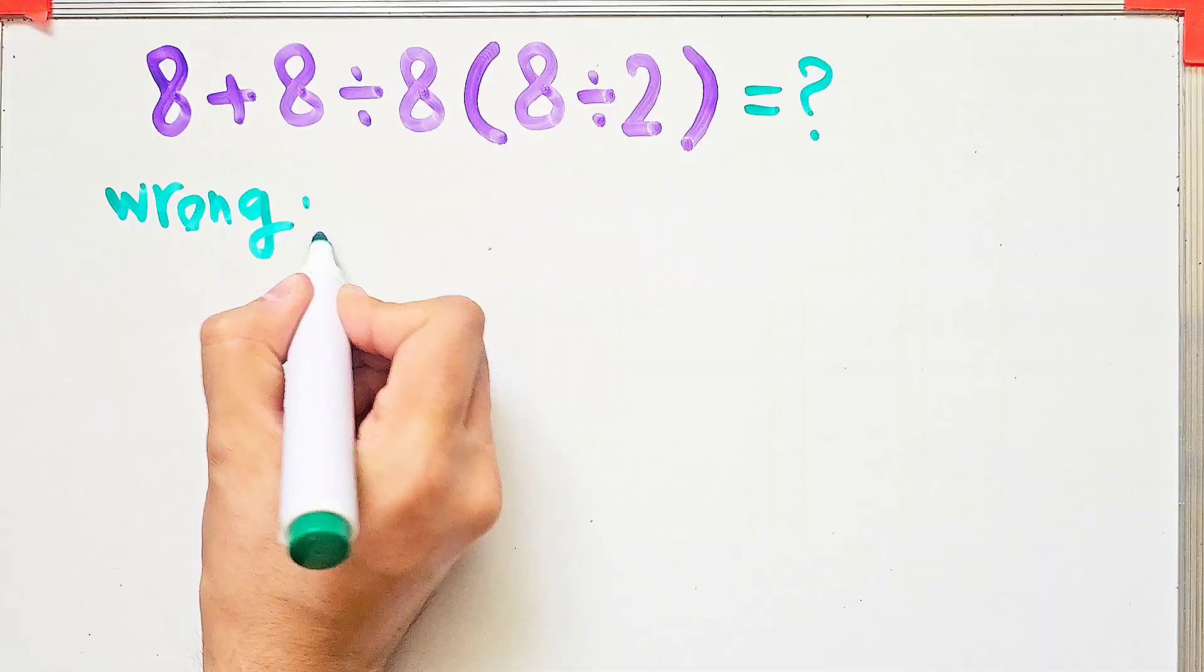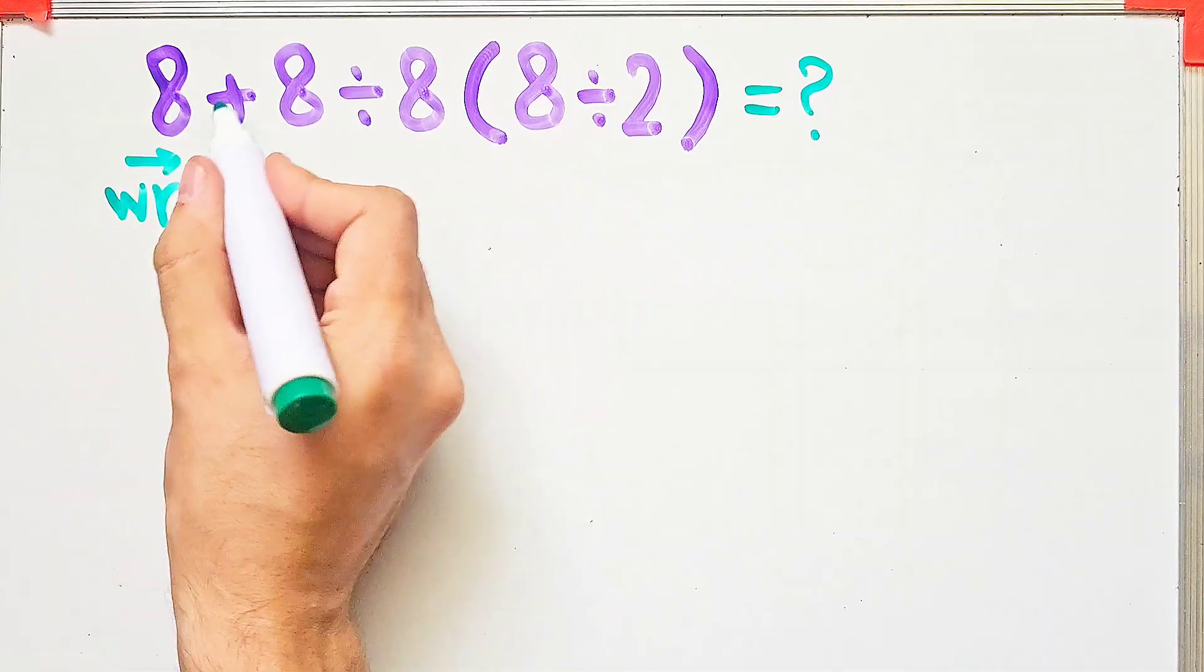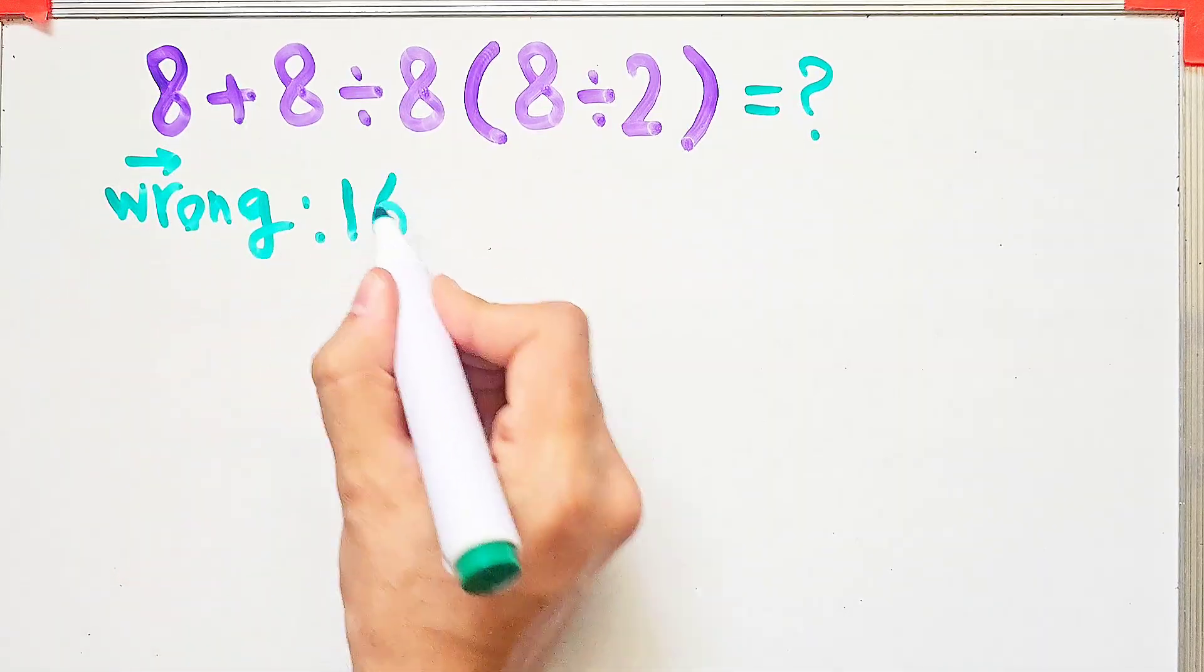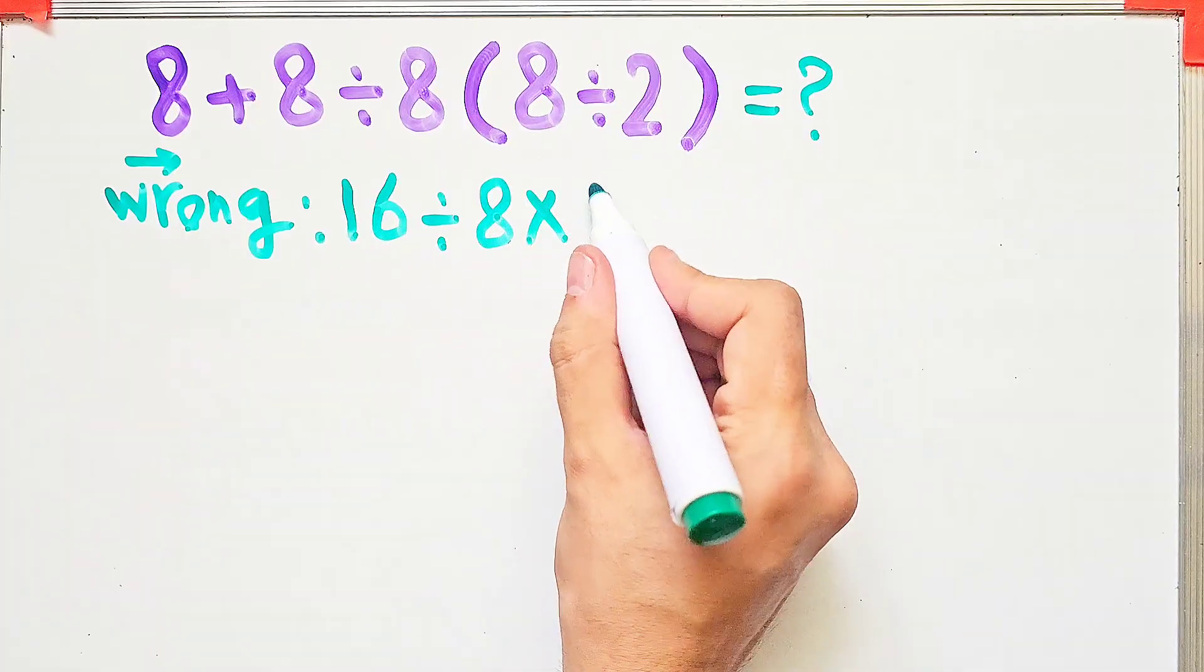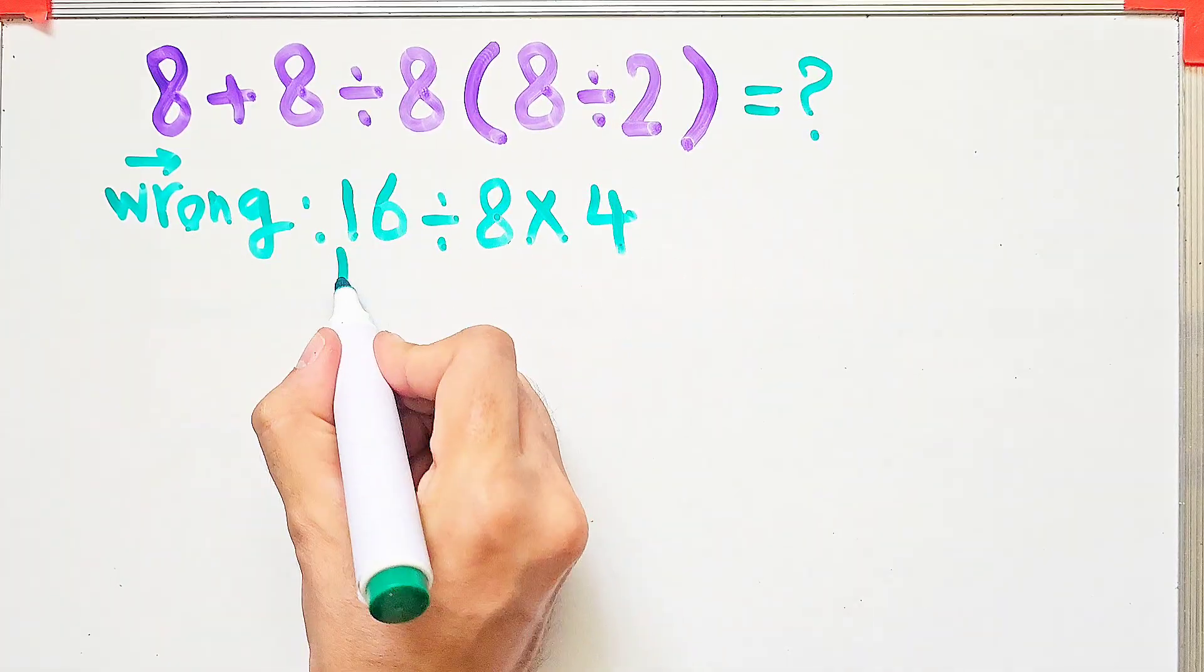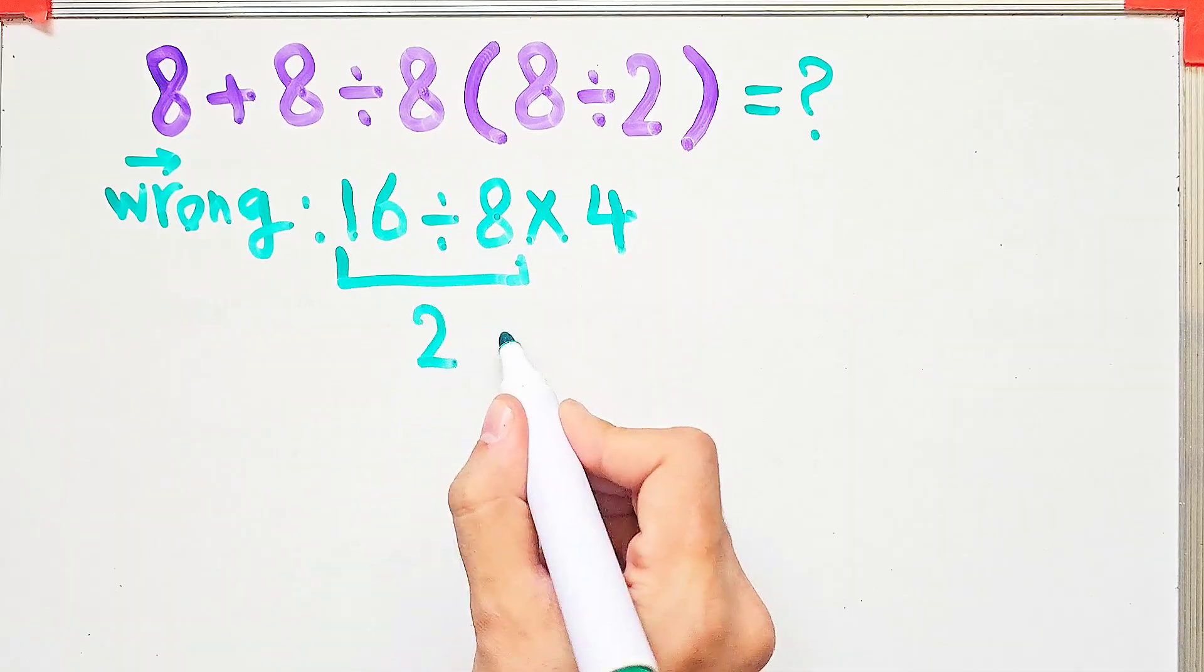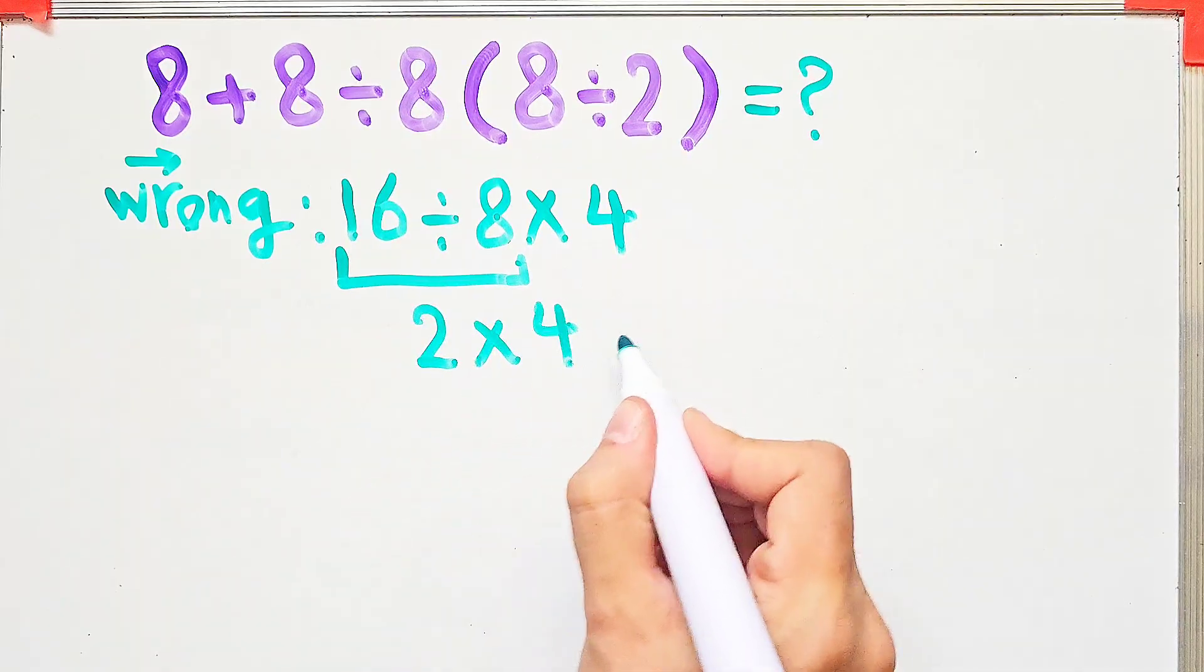In the wrong way of solving this question, some people start from the left and simplify. 8 plus 8 equals 16. 16 divided by 8, then times 8 divided by 2, that equals 4. 16 divided by 8 equals 2, and 2 times 4 equals 8.